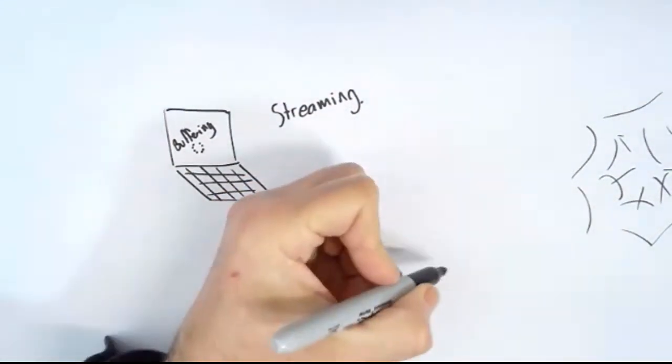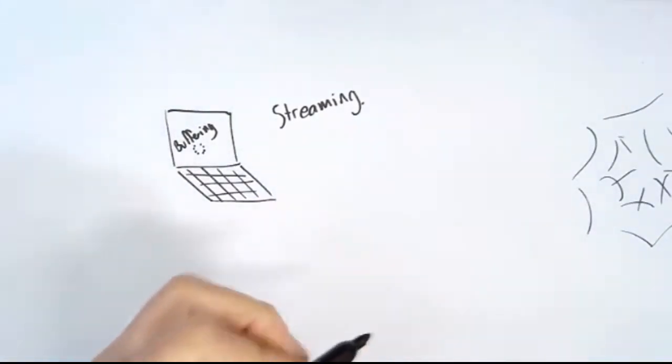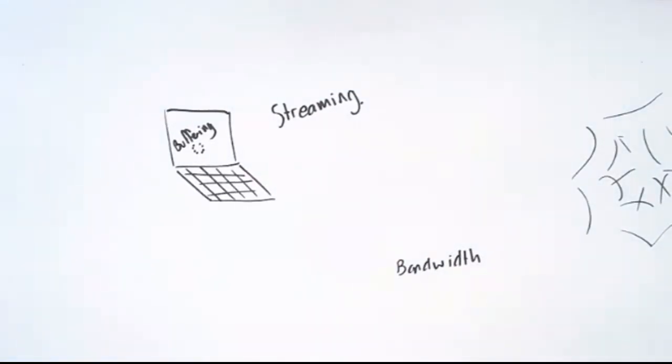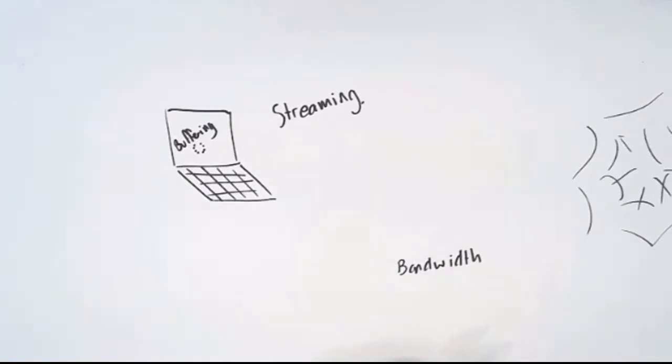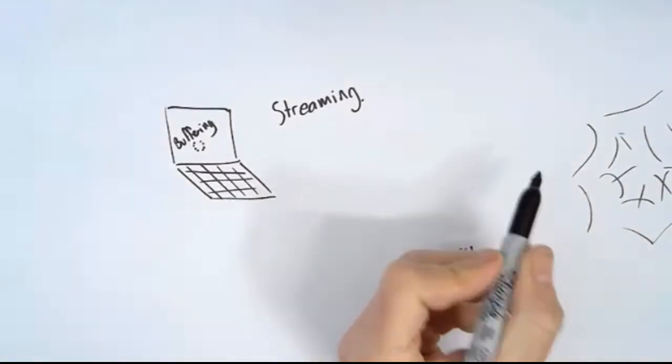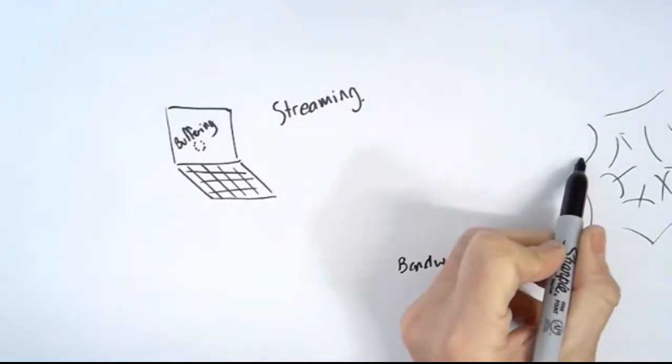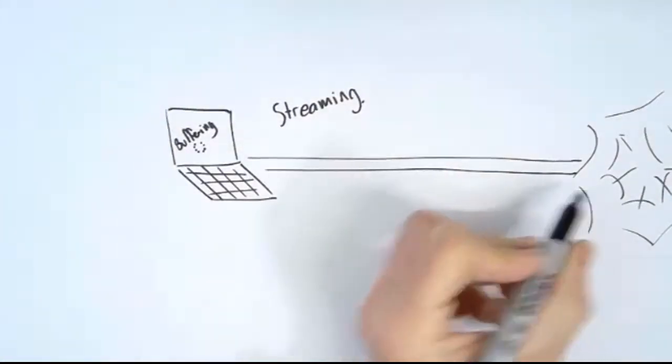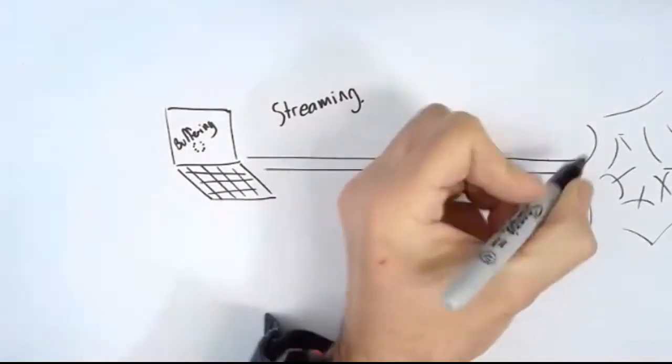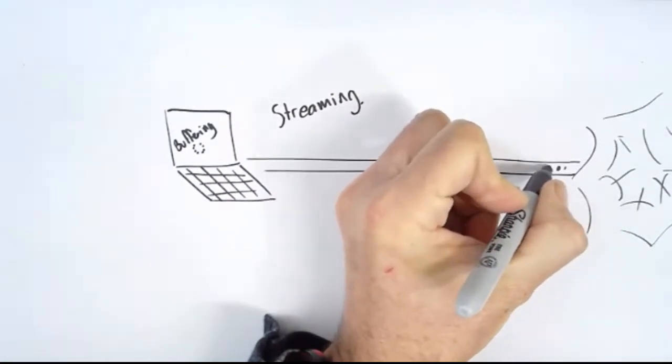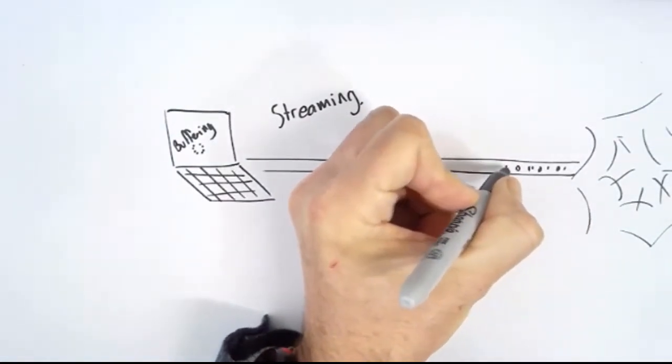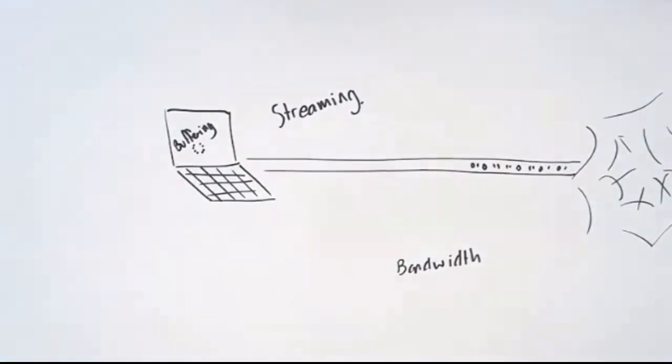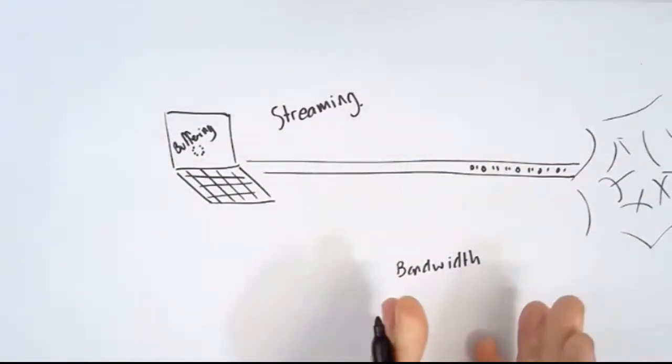So I want to introduce you to this idea called bandwidth. I know that your device isn't connected to the World Wide Web via a cable, but let's imagine it is for a minute. And let's actually imagine that it's not even a cable but it's actually a pipe. Through that pipe is all of the data going from the web to your computer—all of the ones and zeros are going to your computer through this pipe. Now the pipe is only so big. It's only got a certain bandwidth.